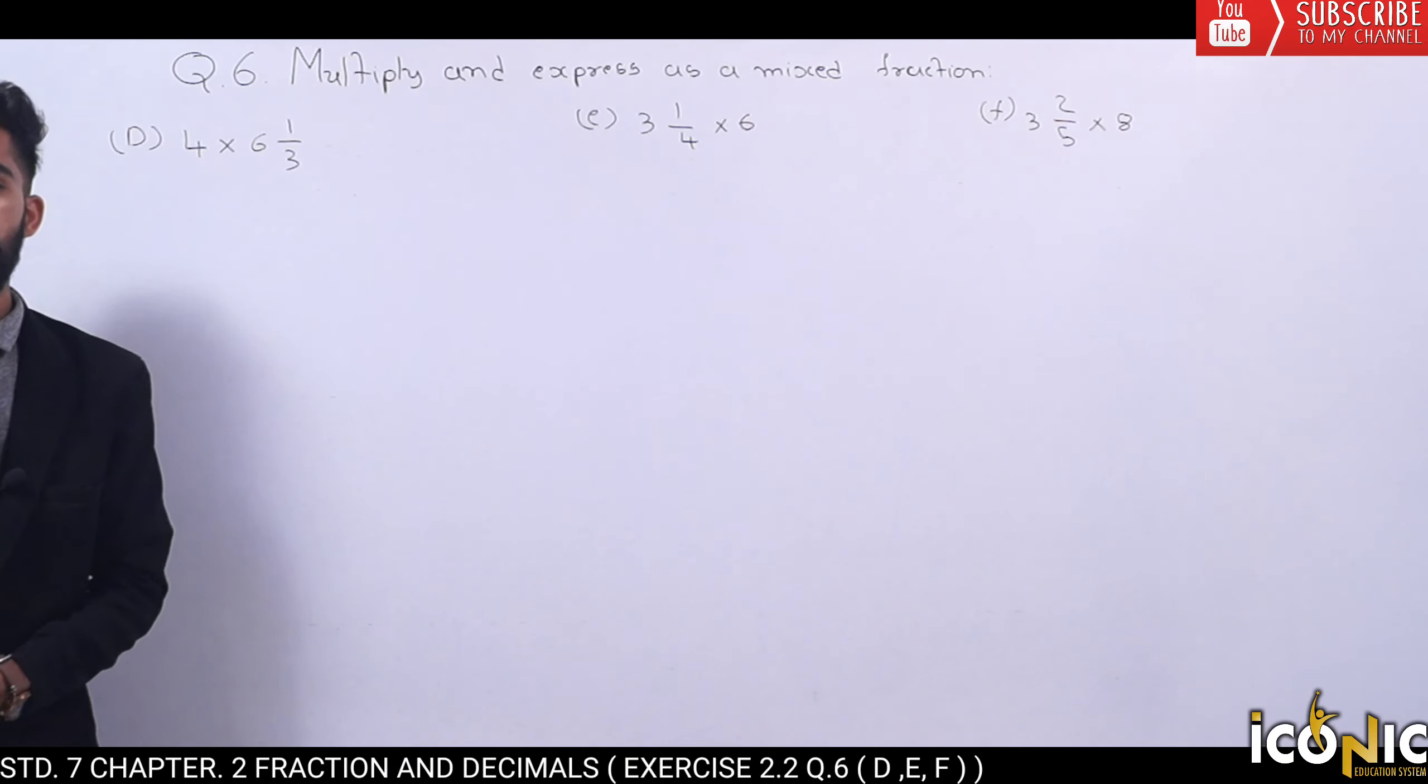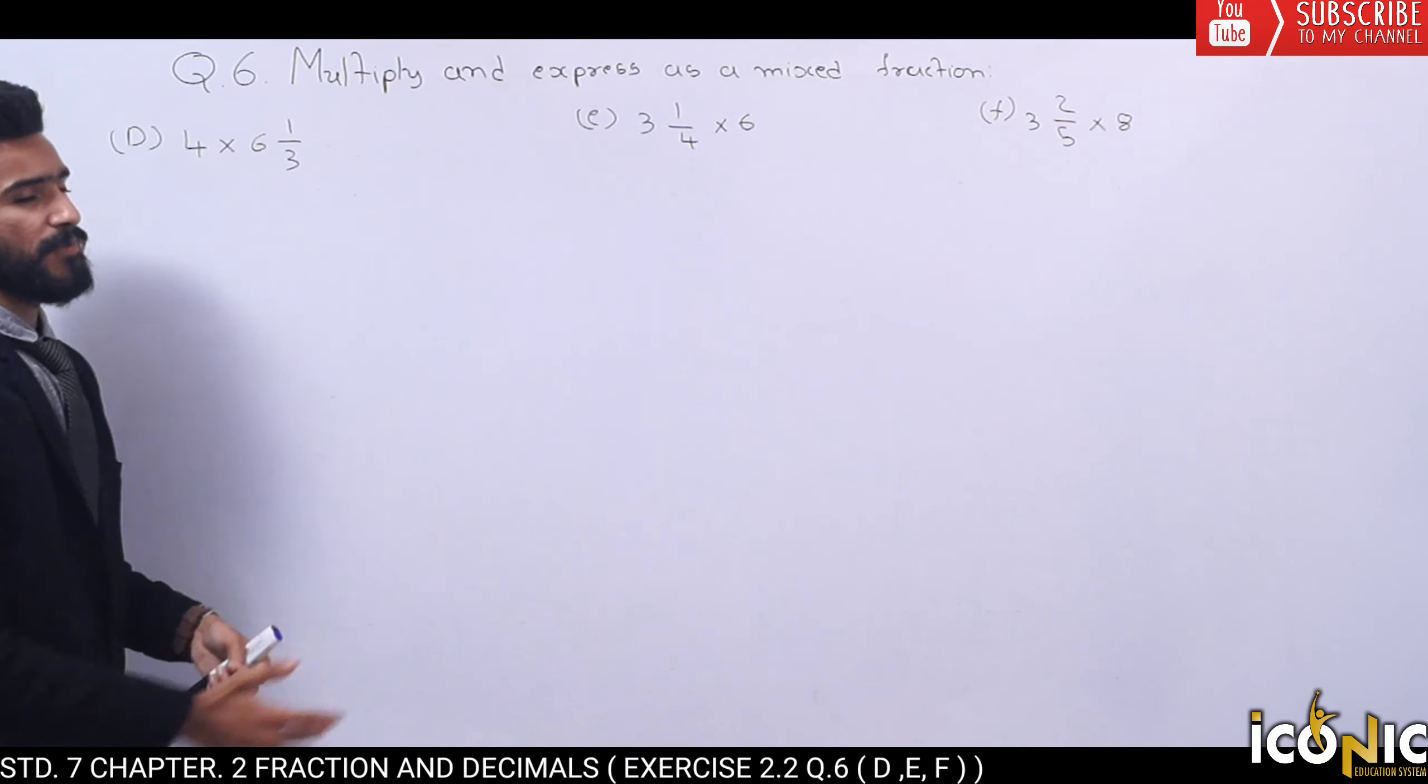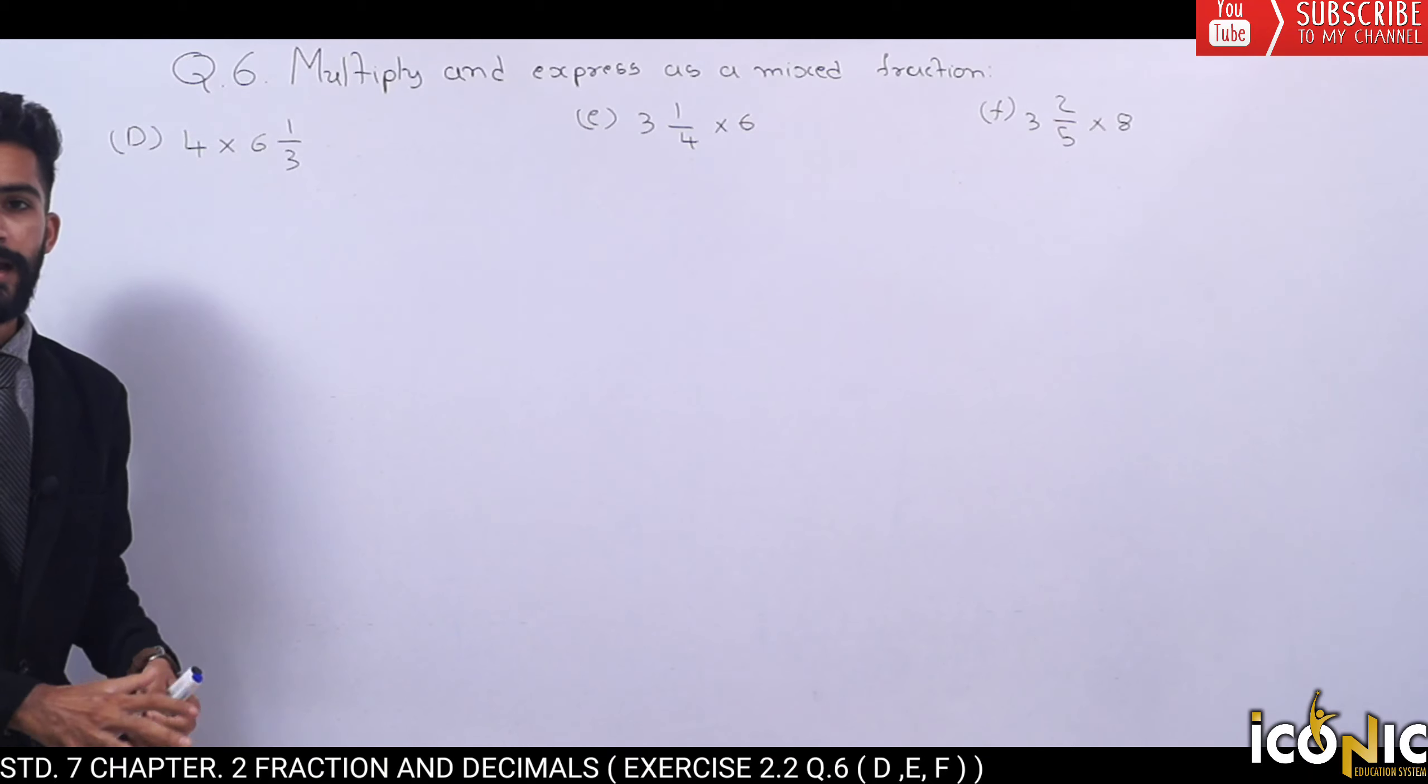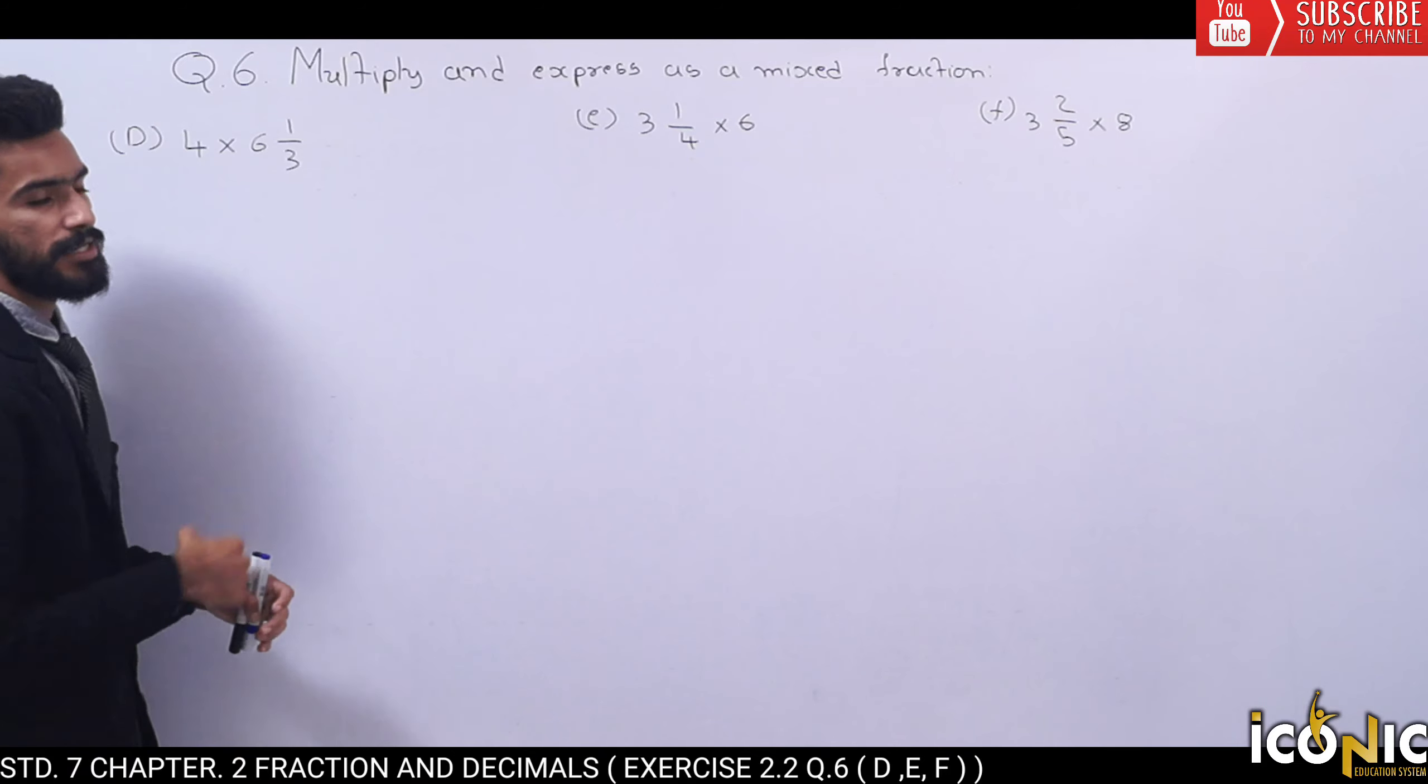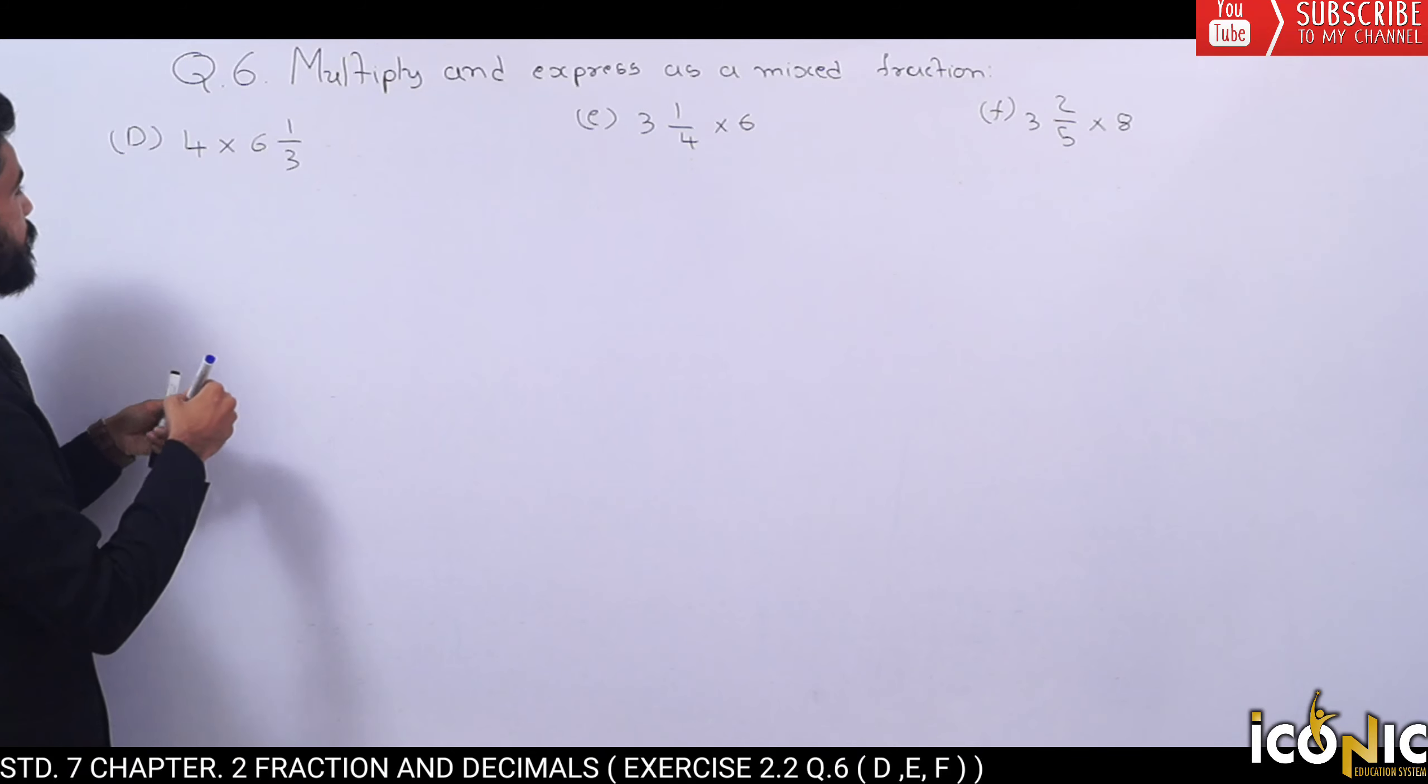In Question 6, we have to multiply and express as a mixed fraction. They've given us some fractions we have to multiply them, and whatever answer we have, we have to convert them into a mixed fraction.